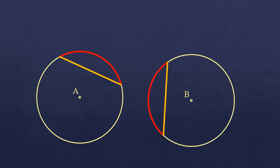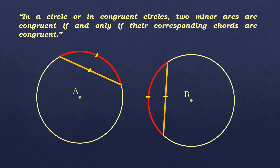The two arcs are in separate circles — circle A and circle B — but assumed to be congruent circles. The same idea applies: if the chords of these arcs are congruent, that means the arcs are also congruent. Our basis is this theorem: in a circle or in congruent circles, two minor arcs are congruent if and only if their corresponding chords are congruent. Since it's if and only if, the vice versa is also true — you know two chords are congruent if their arcs are congruent.